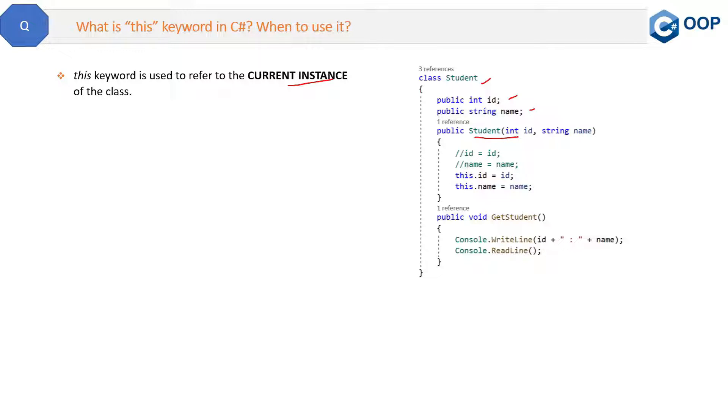What is a parameterized constructor? I have already explained that in the constructor question, so if you want to understand that, you can watch that question. Now, this parameterized constructor will accept two parameters: one is id and one is name. These parameters id and name are different from these fields id and name. They are completely different.